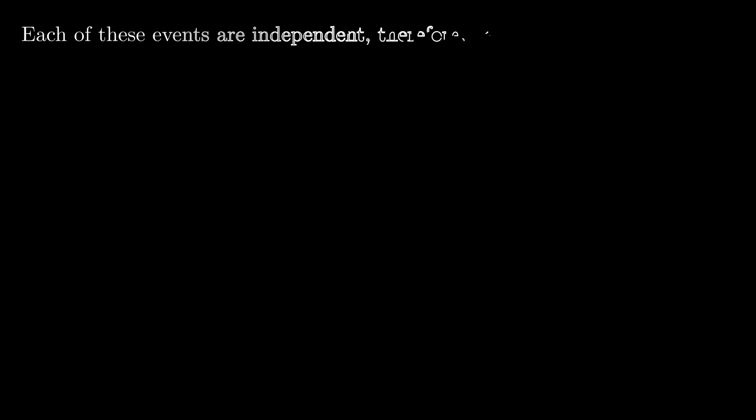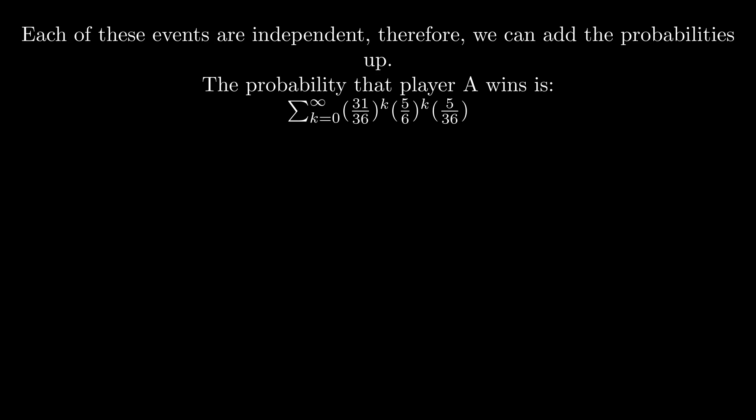As each of these events are independent, we can therefore add up the probabilities. After some simplifications, we get the final answer of 30 over 61.